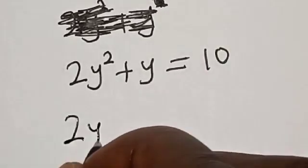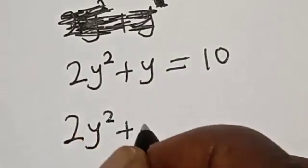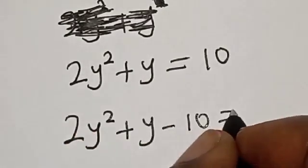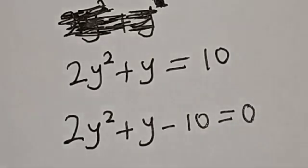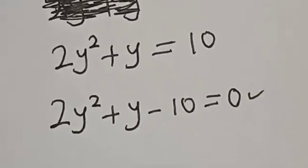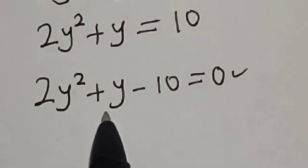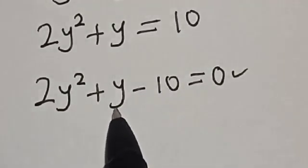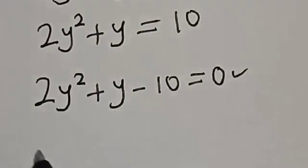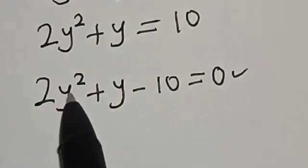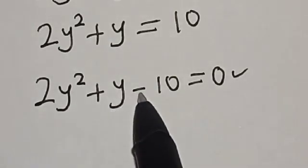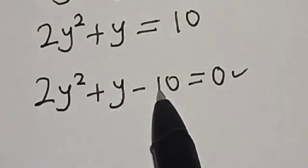We have 2y squared plus y minus 10 is equal to 0. This is a quadratic equation which can be solved using the quadratic formula or factorization method. In this case, I'm going to use factorization. The coefficient of y squared is 2, the coefficient of y is 1, and the constant is minus 10.